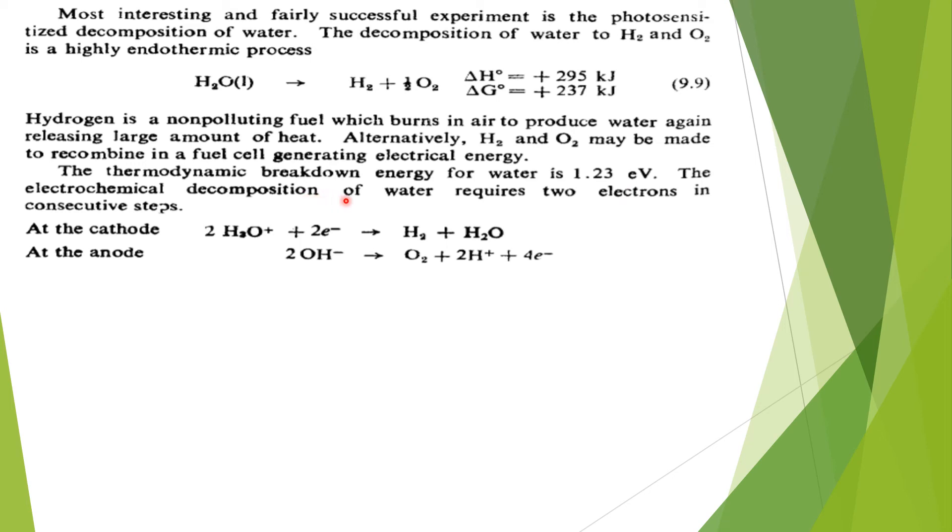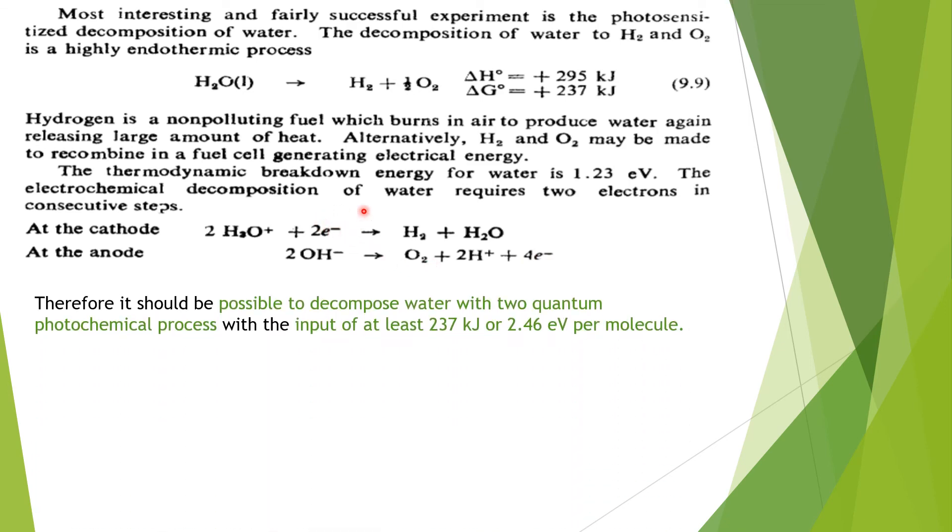The electrochemical decomposition of water requires two electrons in consecutive steps. The hydronium ion, when we take two water molecules, forms H3O+ plus OH-. That H3O+ on combining with electrons will form H2 and water. At cathode, reduction is occurring. At anode, the two OH- ions will form O2 plus H2O plus 4 electrons. It is a two quantum photochemical process because it requires two electrons with input of at least 237 kilojoules energy and 1.23 electron volts for one electron, so for two electrons it will be 2.46 electron volts per molecule.